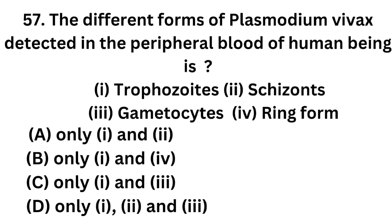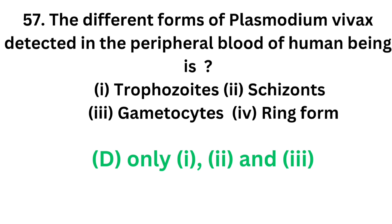Question number 57. The different forms of Plasmodium vivax detected in the peripheral blood of human beings are: 1. Trophozoites. 2. Schizonts. 3. Gametocytes. 4. Ring forms. Option A: Only 1 and 2. Option B: Only 1 and 4. Option C: Only 1 and 3. Option D: Only 1, 2 and 3. The correct answer is Option D — Trophozoites, Schizonts and Gametocytes.